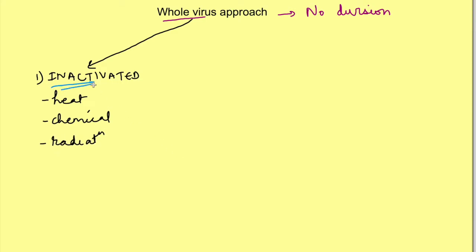In whole virus approach we use the whole virus but it should not have the ability to divide inside the body, otherwise it will cause the disease right? So we have to inactivate it. This is done by heat, chemical or radiation. In this approach basically the virus is killed and then it is reproduced and produced in large quantity.